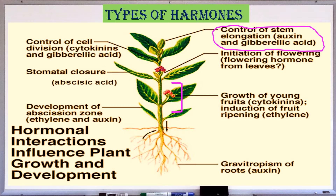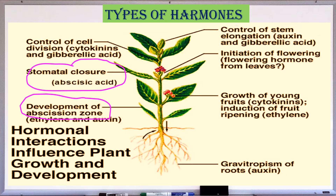Cytokinin promotes the growth of lateral buds. Third, gibberellin — it plays a major role in cell elongation and cell division, and thereby stimulates the elongation of internodes. Fourth, abscisic acid — it is a growth inhibitor which regulates abscission and dormancy. It increases tolerance of plants to various kinds of stress, so it is called the stress hormone.